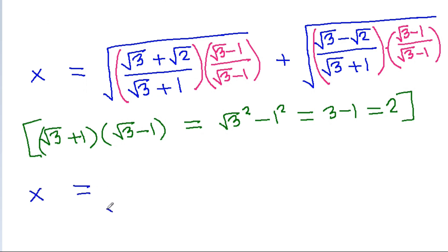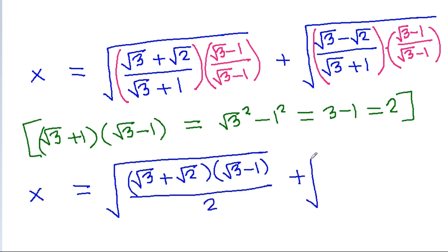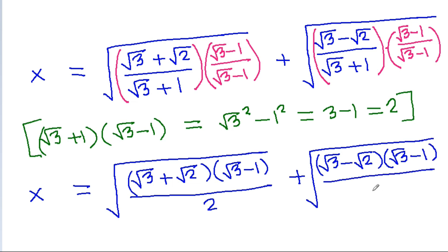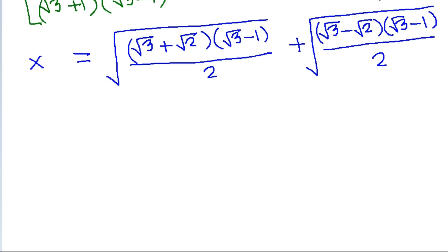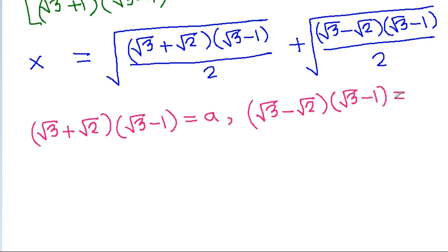So, x is equal to a square root of a square root of 3 plus a square root of 2, times a square root of 3 minus a square root of 2, times a square root of 3 minus 1 by a square root of 2. And a square root of 3 minus a square root of 2 times a square root of 3 minus 1 is equal to b.